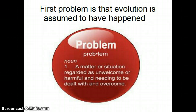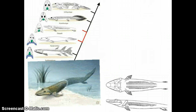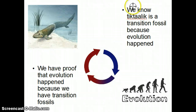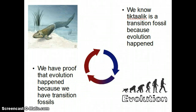Now we're going to talk about Tiktaalik — this little guy right here in the middle. A fossil was found which appeared to contain aspects resembling both a fish or water-dwelling animal and a land-dwelling animal. Because they assumed evolution already happened, they saw this as a transition fossil. We know Tiktaalik is a transition fossil because evolution happened, and we have proof evolution happened because we have transition fossils. They're arguing in a circle — one cannot exist without the other. That is a logical fallacy; it is circular reasoning.